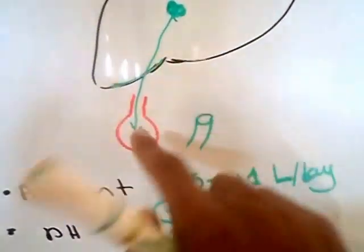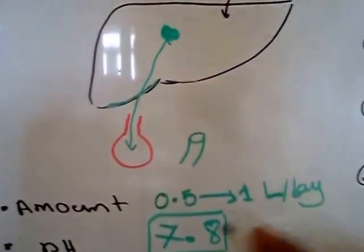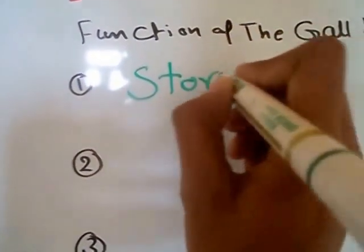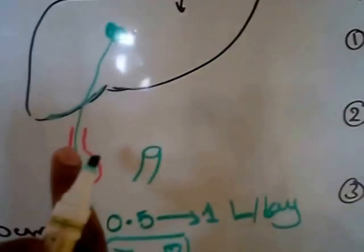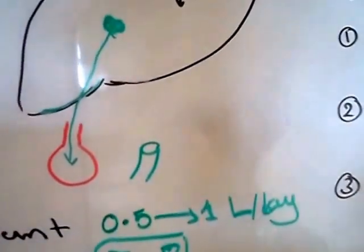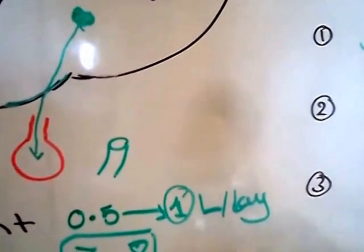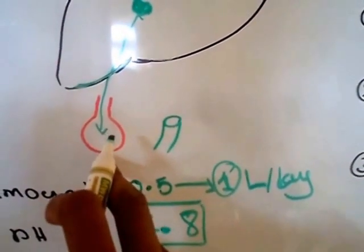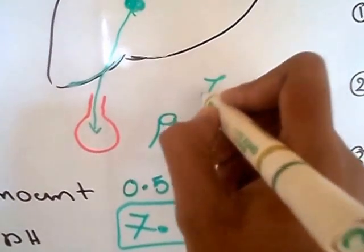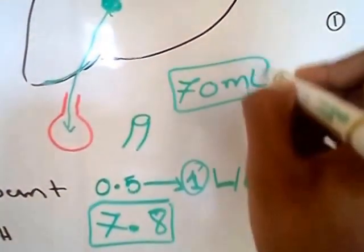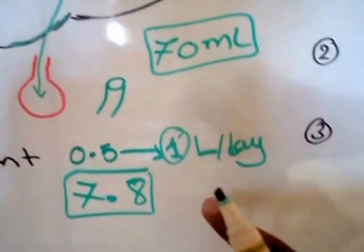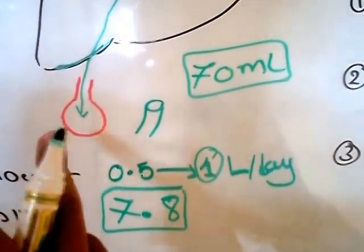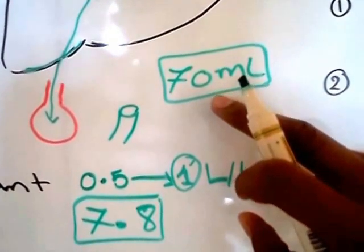The bile is stored in the gallbladder, so the first function of the gallbladder is storage — storage of the bile. Now, I have up to 1 liter of bile produced per day, and the capacity of the gallbladder is only 70 ml. How will I put this 1 liter produced in the liver into the gallbladder, which has a maximum capacity of only 70 ml?